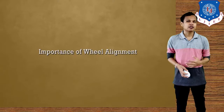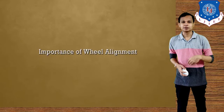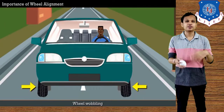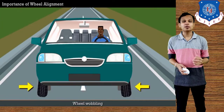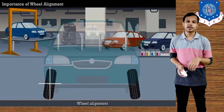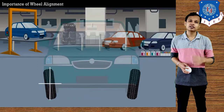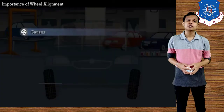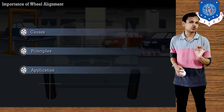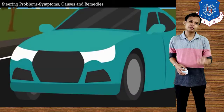Now let's see the detail about wheel alignment — why it is required and what factors it affects. Wheel alignment is required if our wheel is facing any problem, for example if the wheel is wobbling, or if steering is getting harder. The wheel alignment can be done for the wheel's motions and those angles need to be adjusted whenever wheel alignment is necessary. The steering problems, symptoms, causes, and limits need to be understood first.